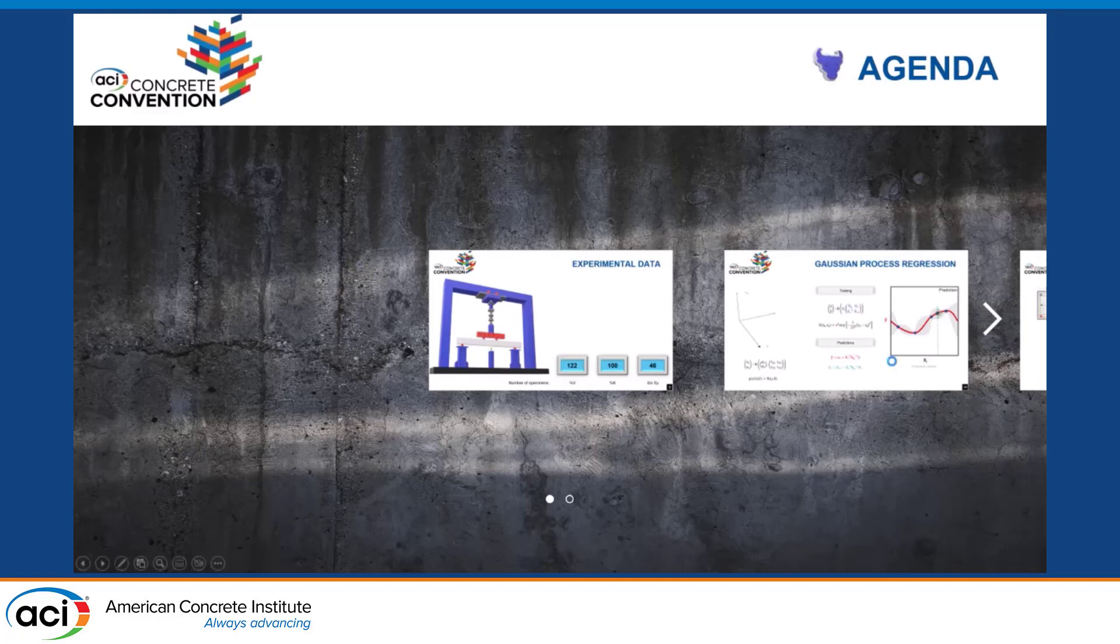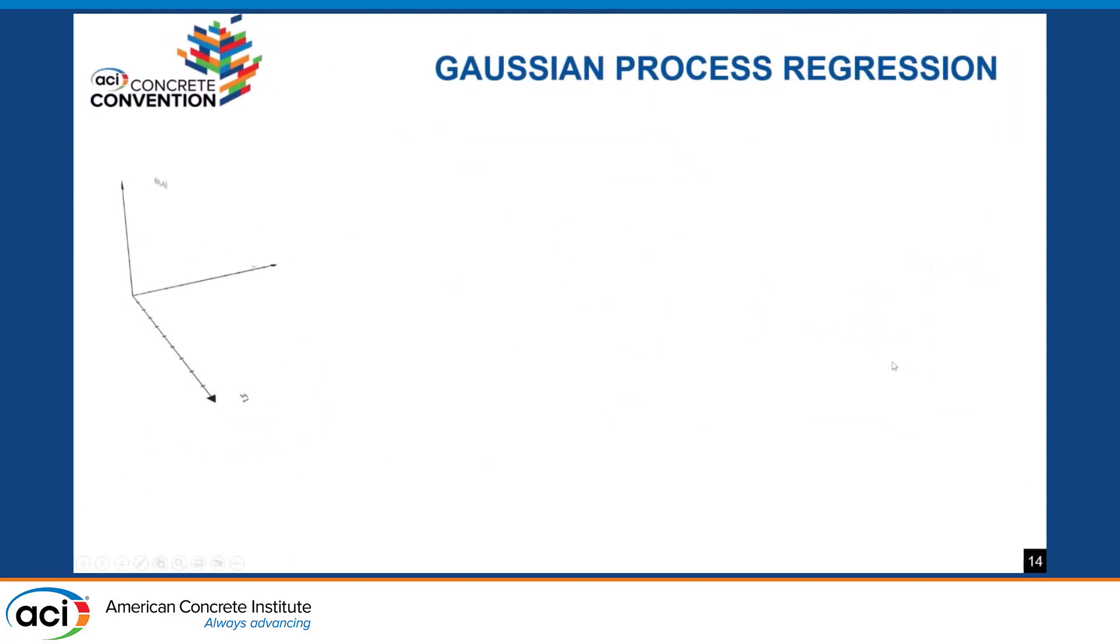As for our machine learning approach, we are using Gaussian process regression algorithm. This algorithm relies on two main principles. The first one is the concept of the joint Gaussian distribution, which is fully defined by this mean and this covariance matrix. If we wanted to find the conditional distribution, the resultant is also a Gaussian distribution. Based on this principle, the algorithm states the following.